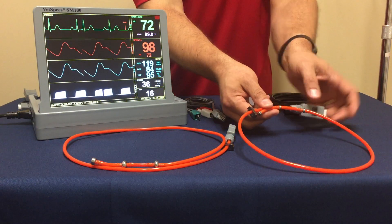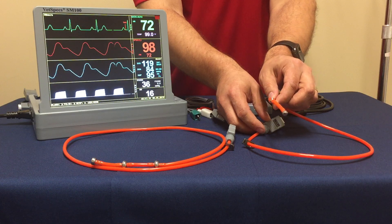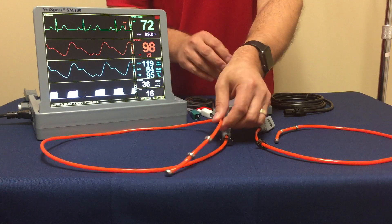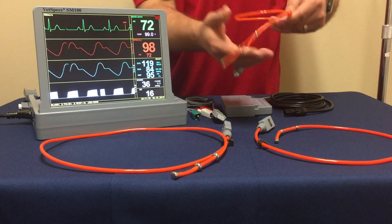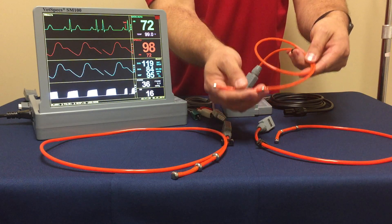Standard with the monitoring systems are a cat and small dog esophageal probe and then their medium to large dog probe. They do offer an optional kitten and puppy probe and just know that that is available.